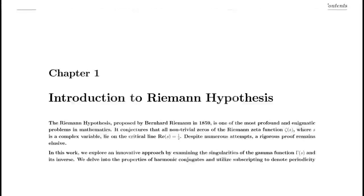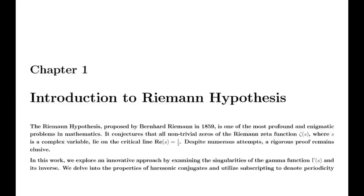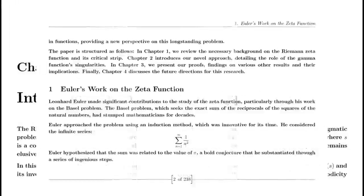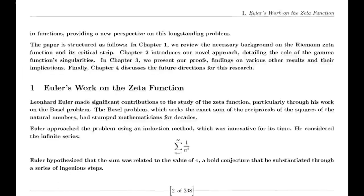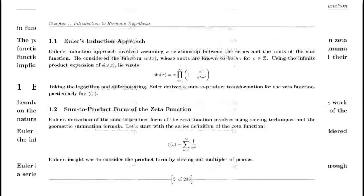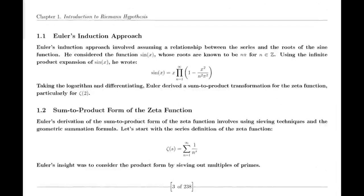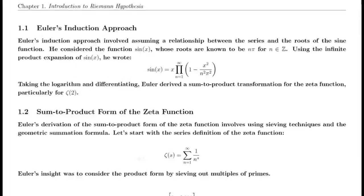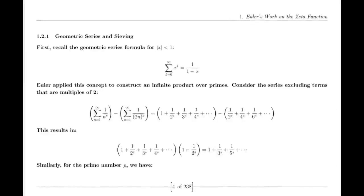One of Riemann's major discoveries was the reflection formula for the zeta function. This formula demonstrates a symmetry between the values of the zeta function at s and 1 minus s. Specifically, it shows that zeta(1 − s) can be expressed in terms of zeta(s) using factors involving π, the gamma function, and trigonometric functions. This reflection formula is fundamental to the theory of the zeta function.